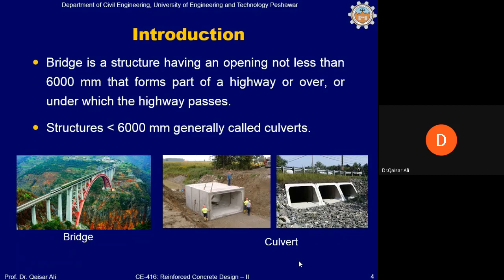From the material and structural formation point of view, there can be many types of culverts and bridges. You can see a bridge in the figure on the left — a truss arch bridge. In the middle picture is a unicell reinforced concrete box culvert, and on the extreme right is a three-cell box culvert.